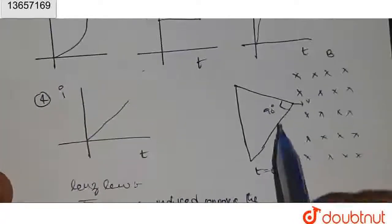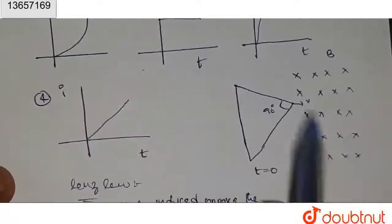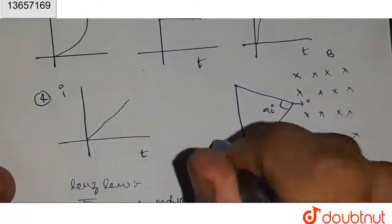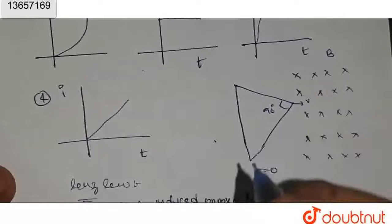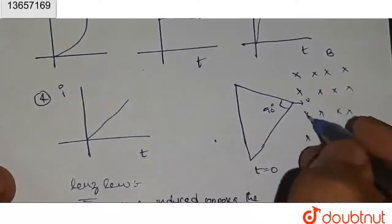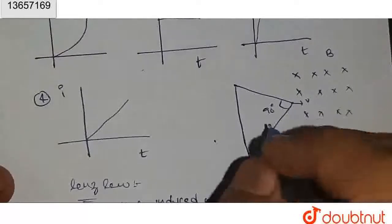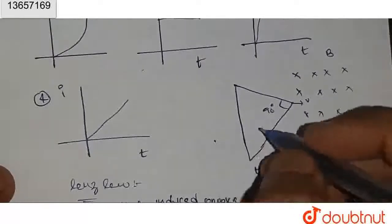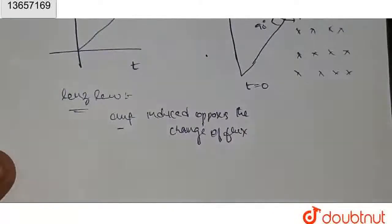Look here, if this loop is entering like this, if it is entering, then our field lines entering will be increasing. This sign is into the paper. So the field lines coming into the loop increases. According to Lenz's law,